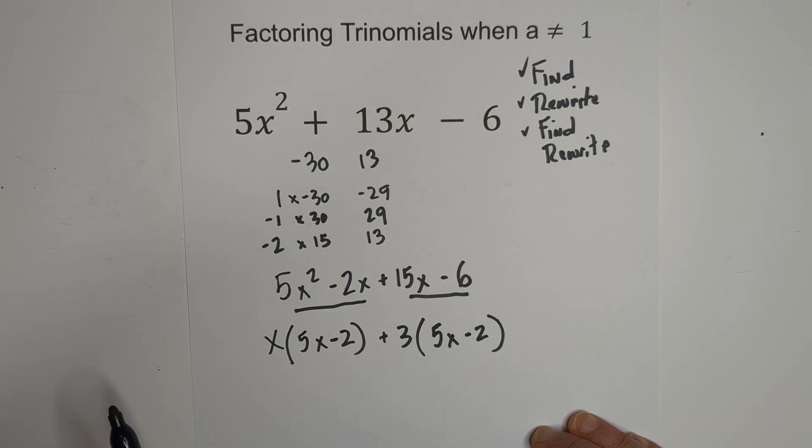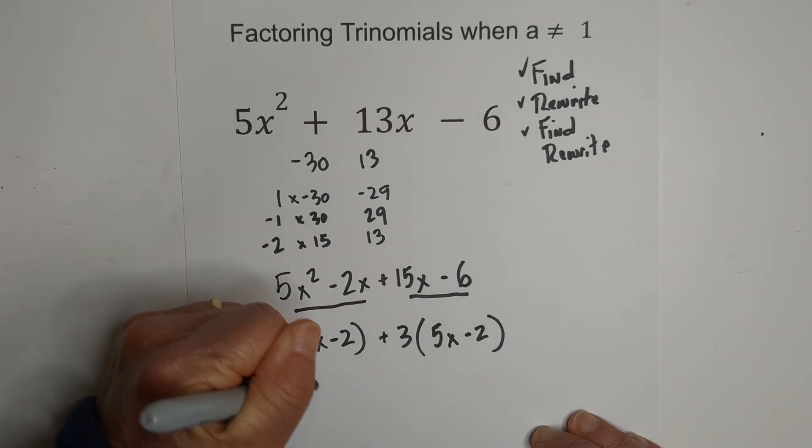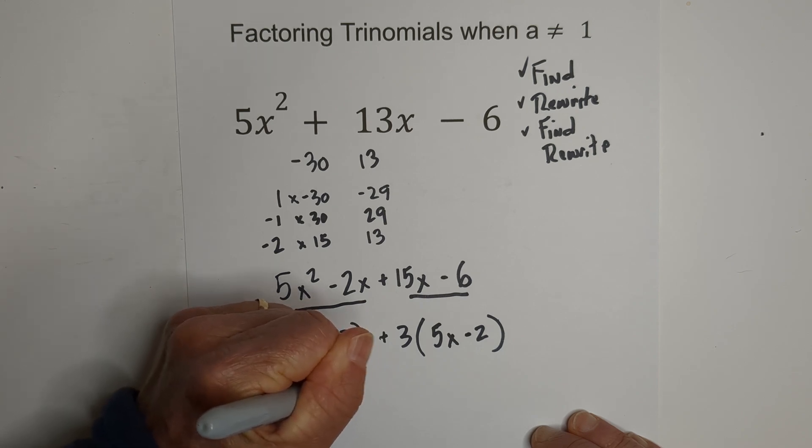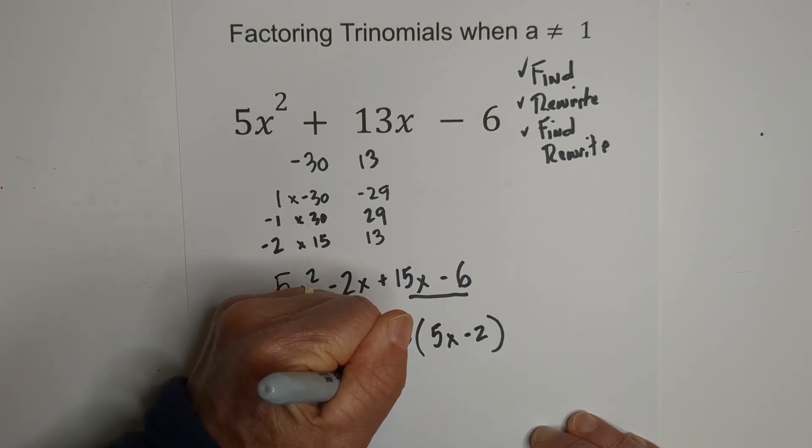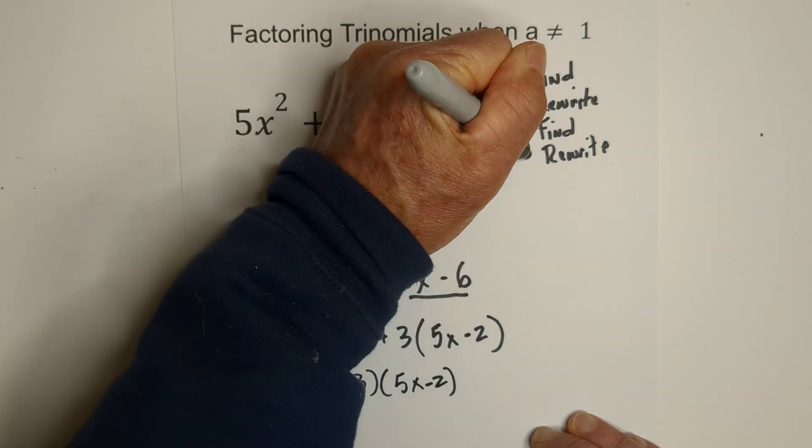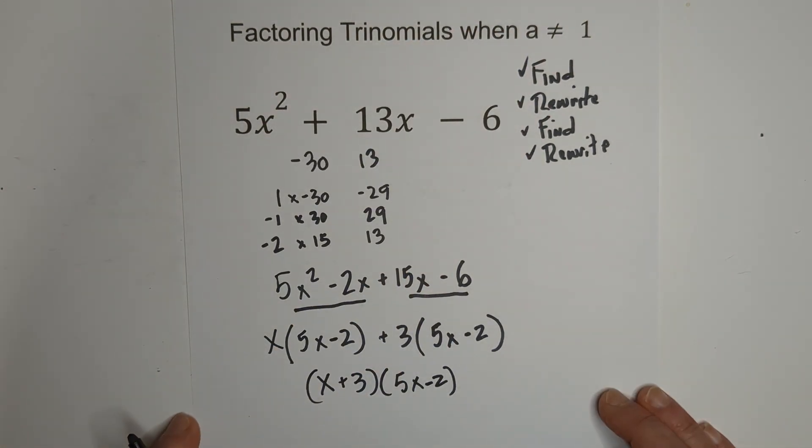Now, all we do is we rewrite. Notice that we have a common binomial, and then we have two terms that were the greatest common factor. So, we're going to combine these. We have x plus 3 times this common binomial, 5x minus 2. So, we have rewritten it.